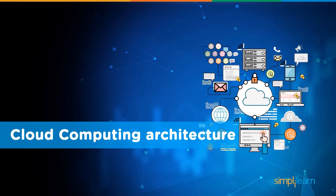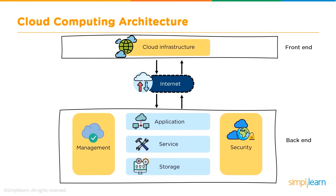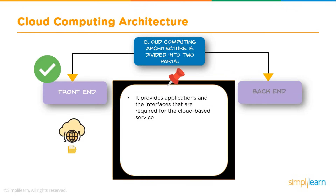Now let's understand the cloud computing architecture. This diagram represents the cloud computing architecture, showing the cloud infrastructure divided into front-end and back-end. The front-end is the internet-facing infrastructure, while the back-end is where the applications, services, and devices such as storage servers reside, along with management and security portals. The cloud computing architecture provides applications and interfaces required for cloud-based services.